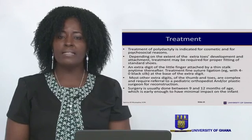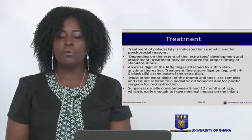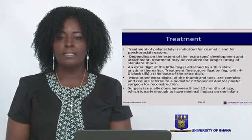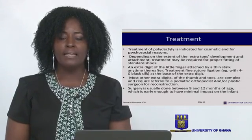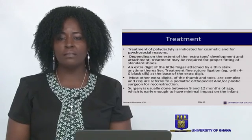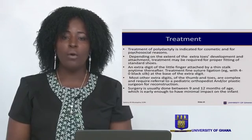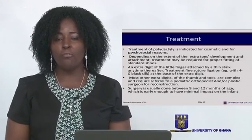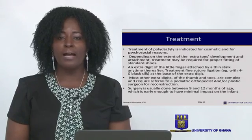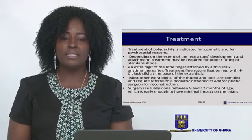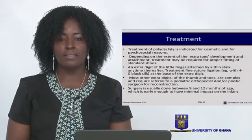Depending on the extent of the development causing the attachment, it may require a very simple procedure — such as just tying off the extra digit with a 4-0 silk suture if it is membranous. However, it may also require an extensive surgical procedure. Usually, surgery is done between 9 to 12 months of age.